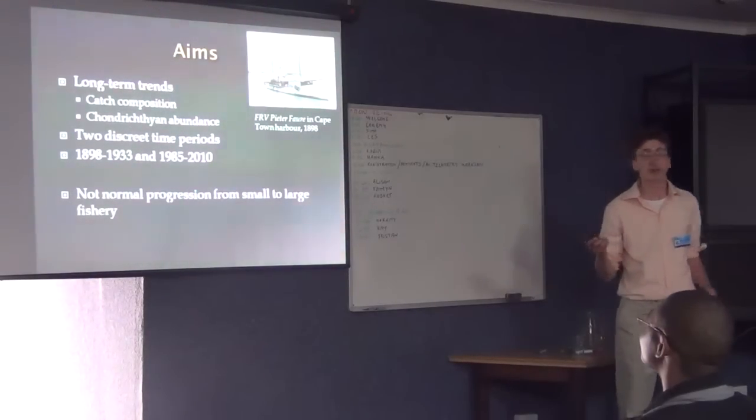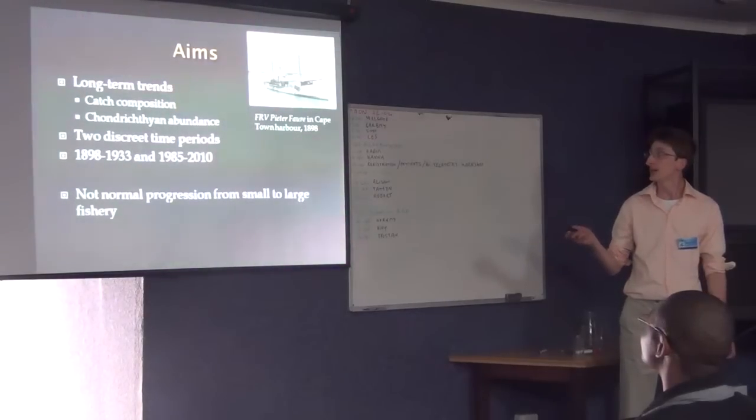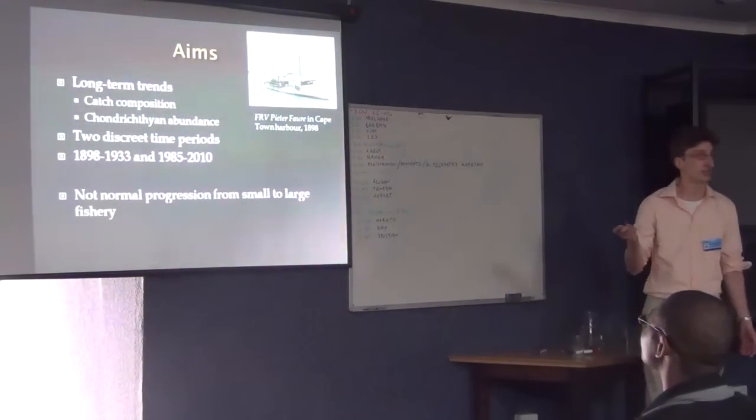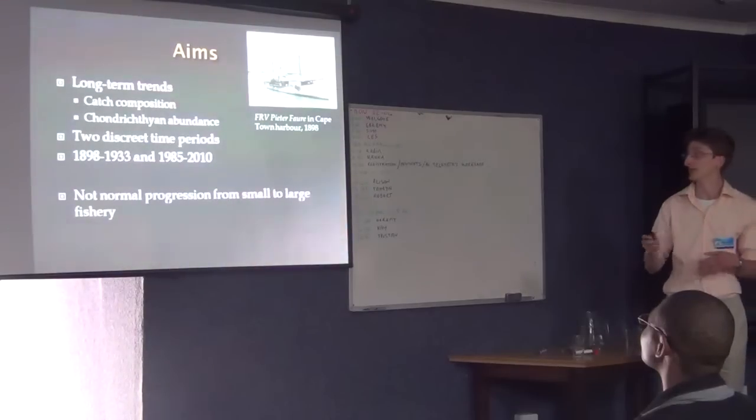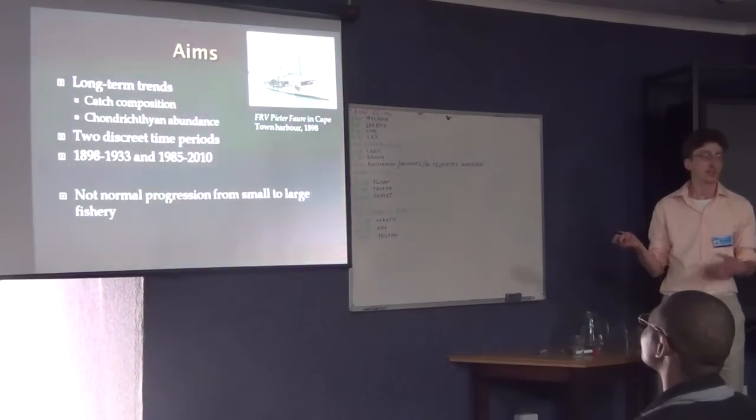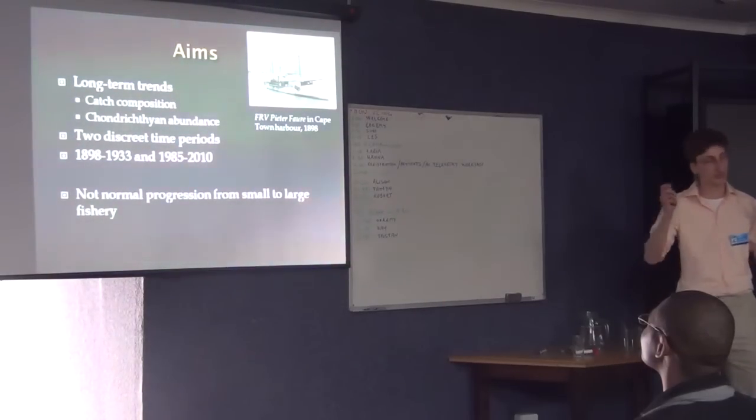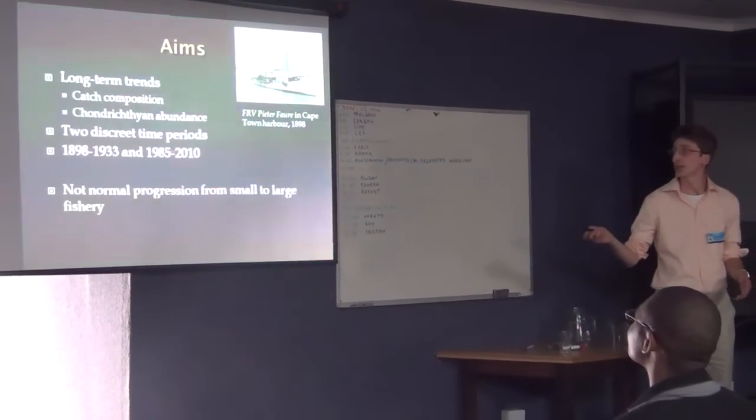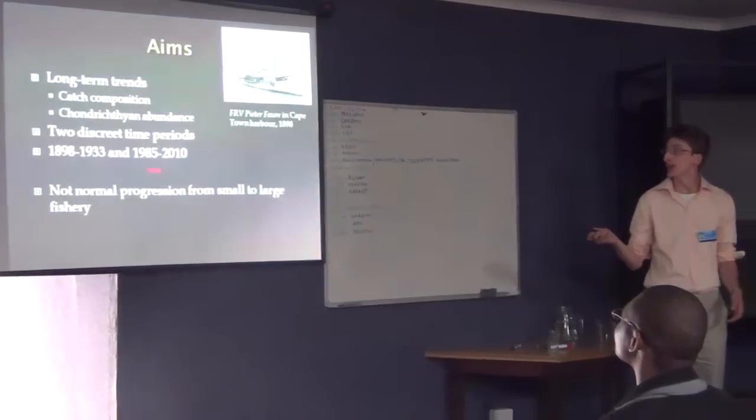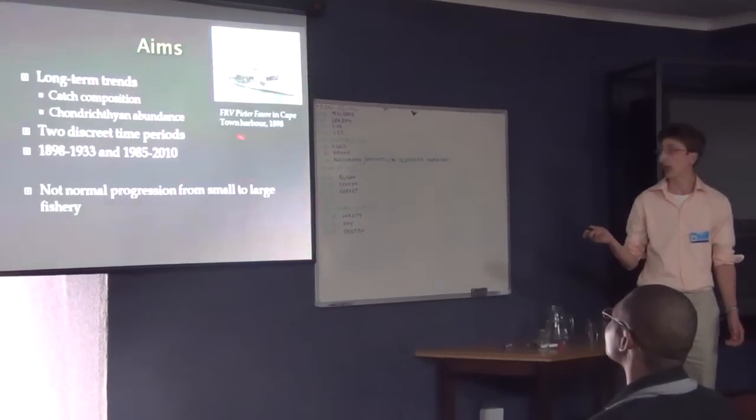The aim of this study was to find long-term trends in both the catch composition, so relative abundance, and the chondrichthyan actual abundance. What I'm going to do today is tell you about the lumped survey between two periods: 1898 to 1933, and then again 1985 to 2010.